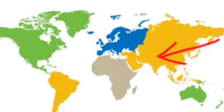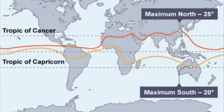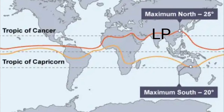Easterly jet streams blow during the summer and are warm winds, while westerly jet streams blow in the winter season and are cold winds. During the summer season, the easterly jet streams blow from the eastern part of India. Since it is a warm wind, it increases the temperature as it blows through the area. The low pressure already developed over the northern plains of India due to the vertical rays of the sun and the shifting of ITCZ becomes more intensified when the easterly jet streams blow over this area.